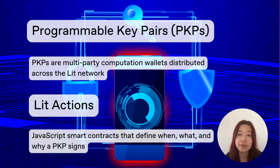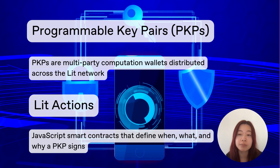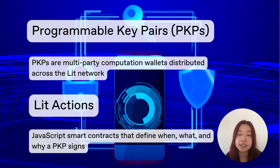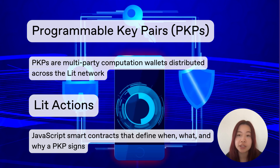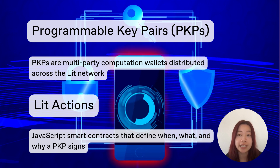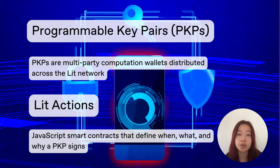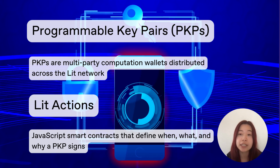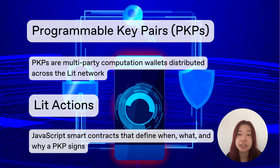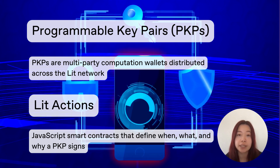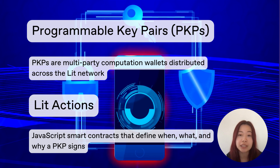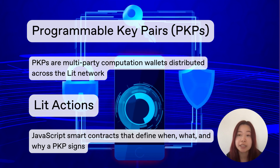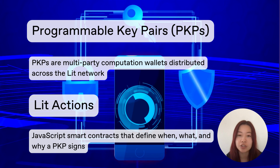Imagine smart contracts having their own public and private key pairs, just like any other wallet. These smart contracts, known as LIT actions, can make arbitrary HTTP requests and use off-chain data in their computations. They can write and read from any HTTP endpoint, blockchain state machine, or storage system, expanding the possibilities of decentralized applications.